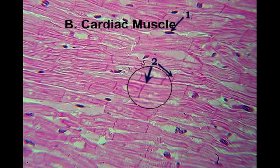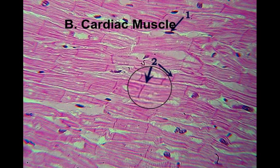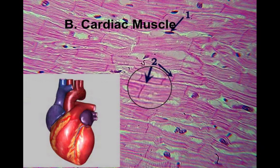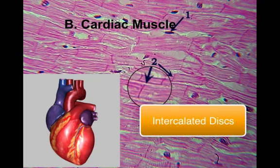Next is cardiac muscle, which is structurally unique from any of the other muscles and found only in the heart. Diagram point one is pointing to the nucleus of one particular cardiac muscle fiber. Point two is pointing to the divisions between neighboring muscle cells. These divisions are made up of proteins and are called intercalated discs. We'll cover more about these when we study the heart.